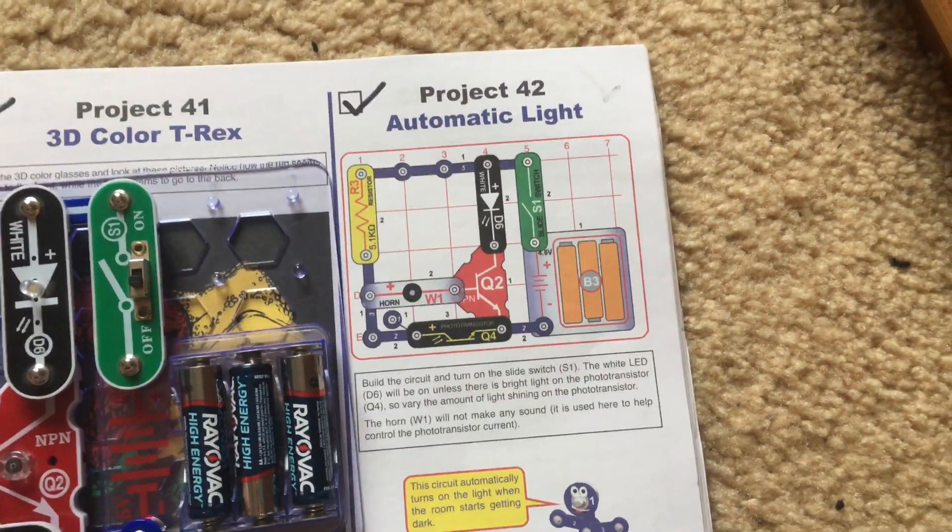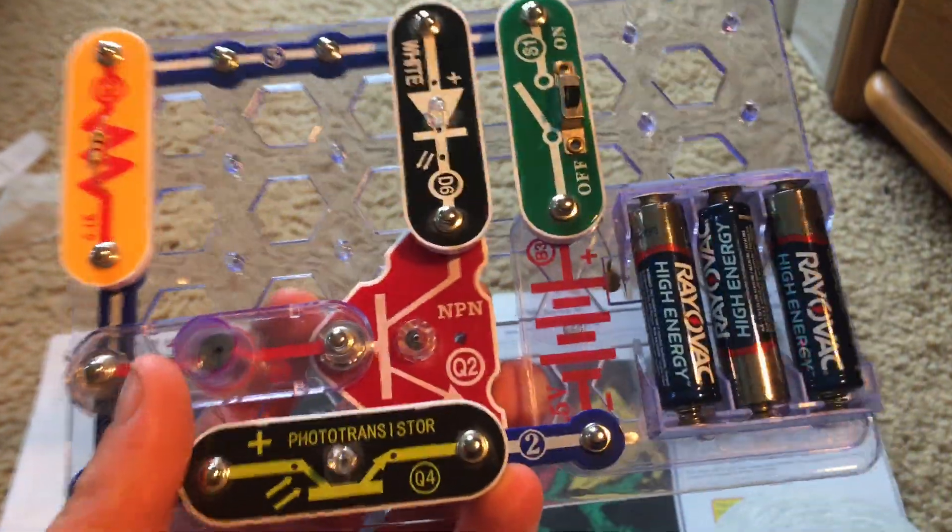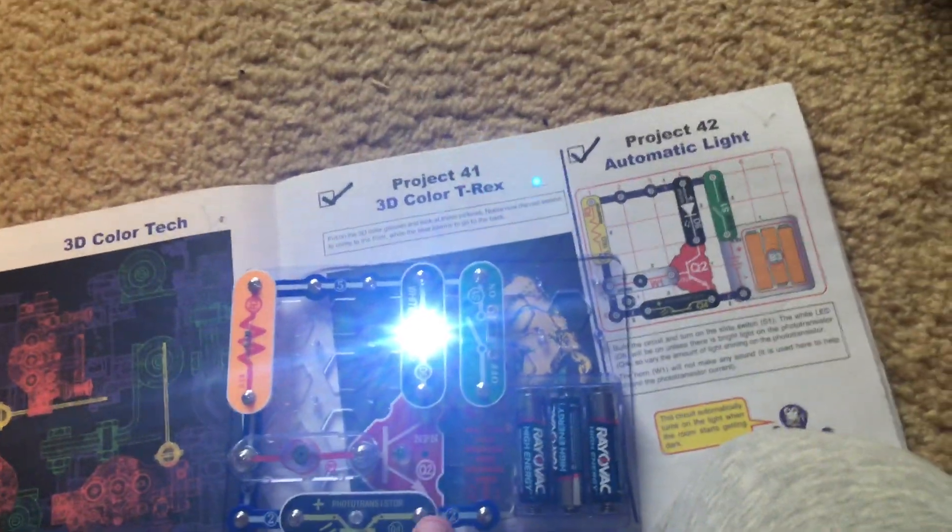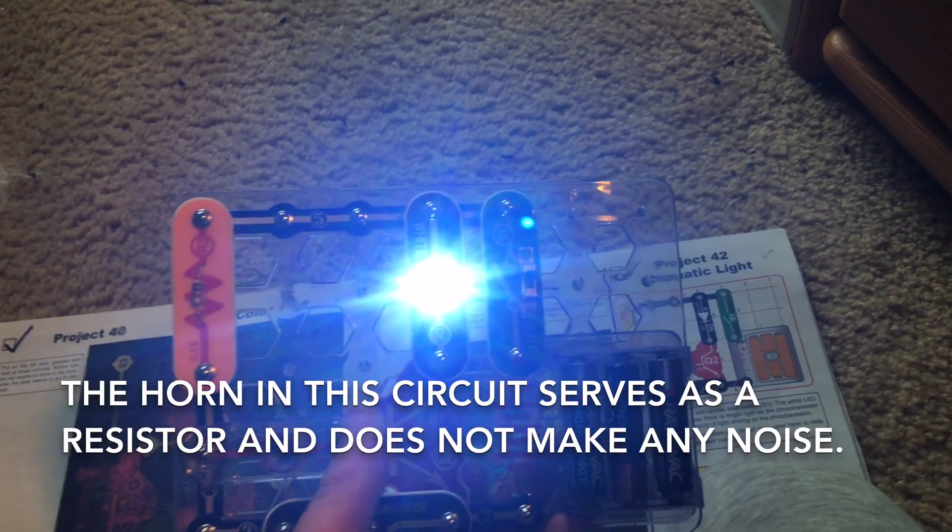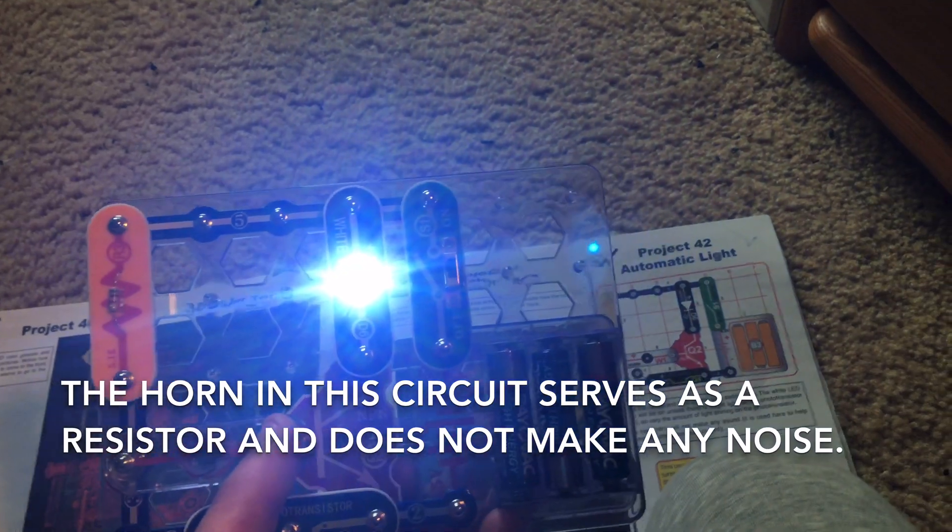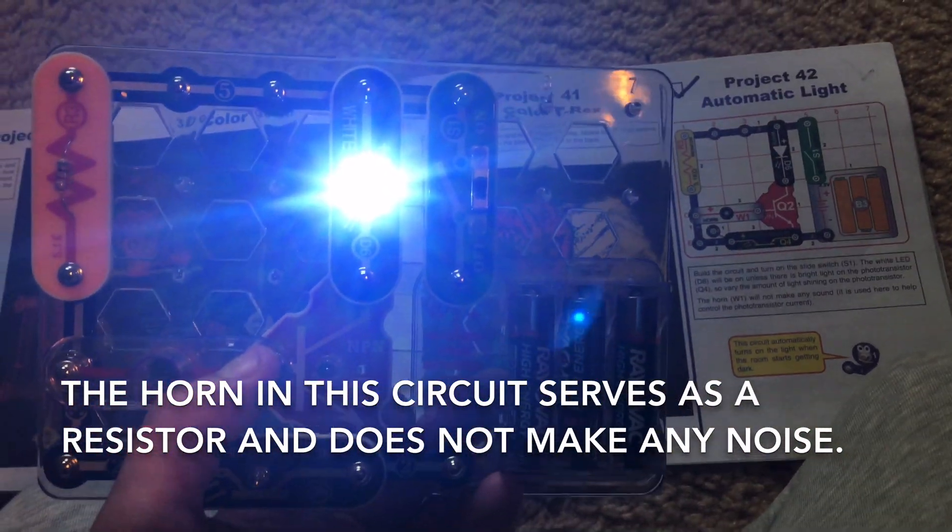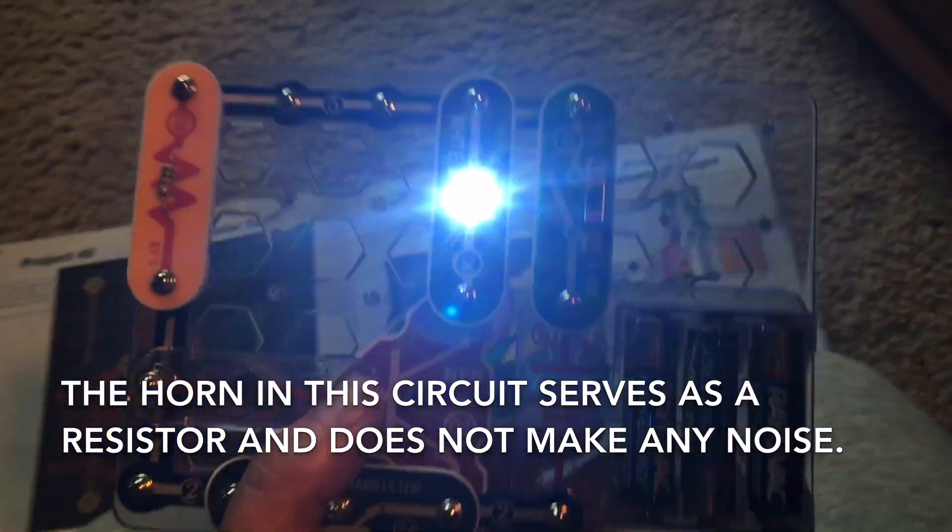Project 42, Automatic Light. We are going to use one of the smaller base grids and build this circuit. We're going to turn on the slide switch and the white LED will come on. I'm going to quickly point out the horn is not going to sound in this project because it is used as a resistor to control the current from the phototransistor.